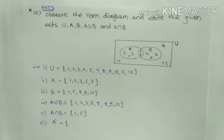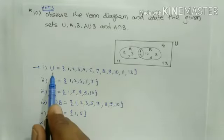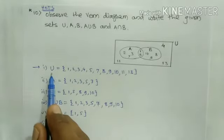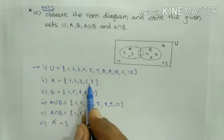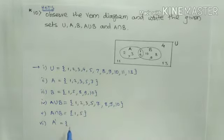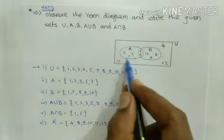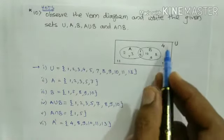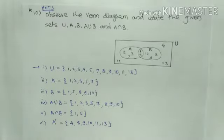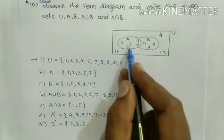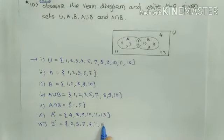Now we have to write the complement of A. The complement of A means the set of all elements which are in U but not in A. The elements of U are 1, 2, 3, 4, 5, 6, 7, 8, 9, 10, 11, 13 and the elements of A are 1, 2, 3, 5, 7. So complement of A equals {4, 8, 9, 10, 11, 13}. Complement of B equals {2, 3, 7, 4, 11, 13}.